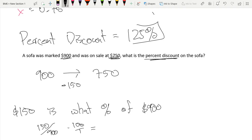This is just equal to 150 over 900 times 100, which is just 16 and two-thirds percent. So that's our percent discount, 16 and two-thirds percent.